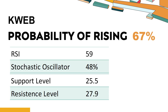How has KWEB performed recently according to technical analysis? KWEB's 14-Day Relative Strength Index (RSI) value was 59. When the RSI is between 50 and 70, it generally indicates that the stock is moderately bullish. This means that the security's price has been rising, but has not yet reached overbought levels, which are usually considered an RSI reading of 75 or higher. The current stochastic oscillator of KWEB is 48%, indicating a strong downtrend and selling pressure. An oversold signal may indicate that a stock is hitting a temporary bottom, but it doesn't necessarily mean that the trend will reverse immediately.